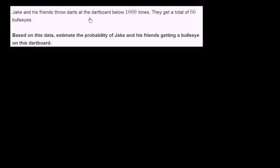Jake and his friends throw darts at the dartboard below 1,000 times. Well, actually, I don't have a picture here of the dartboard. But it's not too hard to imagine a dartboard. So let me draw a little dartboard here. You get the general idea. They're throwing darts at a dartboard, and they're going to throw it 1,000 times. And they get a total of 66 bullseyes. So they hit the bullseye 66 times.